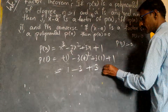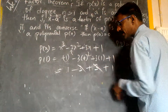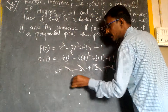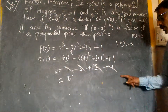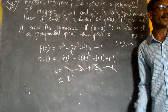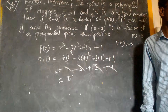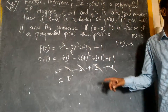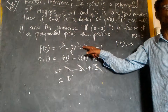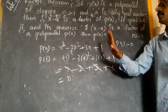3 times 1 is 3. Plus 1. So we get 1 minus 3 plus 3 plus 1, which equals 2. Therefore x minus 1 is a factor? No — let me check. This is my cubic polynomial. I am taking a equal to 1.